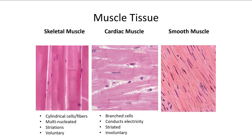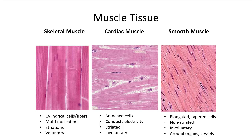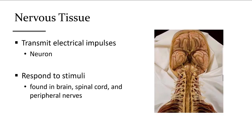Cardiac muscle is involuntary — working without your brain needing to tell it each time. It has short branched cells, conducts electricity so cells get the beat-to-beat signal, and it's also striated — you can see tiny striations of light and dark. Smooth muscle cells are elongated — they look a lot like dense regular connective tissue but you can see the cells more prominently, usually pink. These are the ones around organs and vessels.